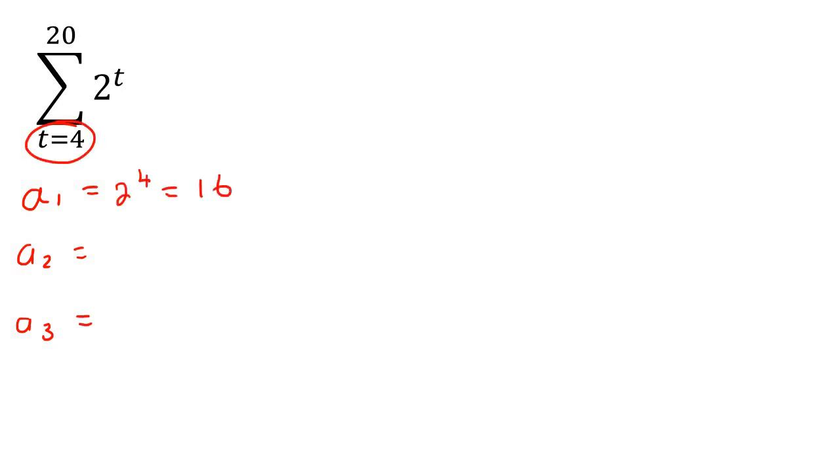You start with whatever this number is. That'll be 2 to the 4, which is 16. Then, it'll be 2 to the 5, because you're adding 1, so it's 32. And then, 2 to the 6, which would be 64. So let's look at these numbers, and let's see if we can identify any pattern. Ah, it's geometric. See how we're multiplying by 2?